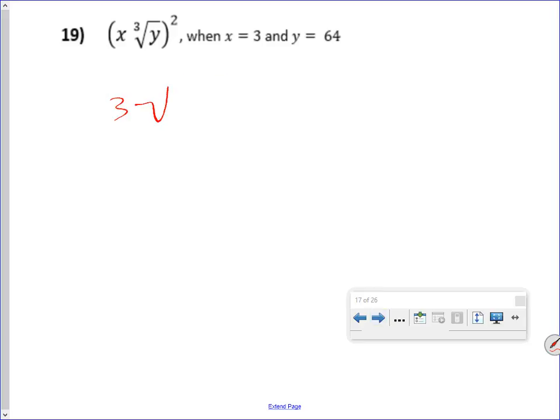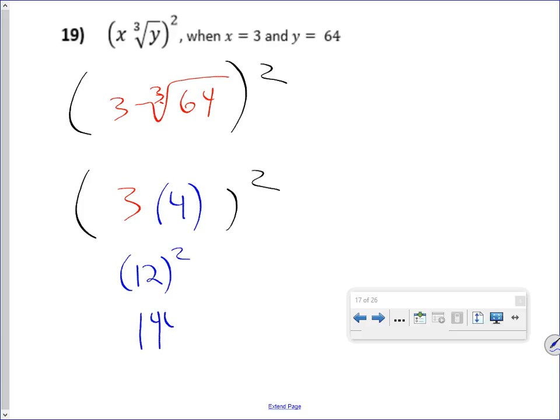3 times the cube root of 64, but we are squaring all of that. So the first thing we need to do is evaluate the cube root of 64, which is 4. So that will be 12 because we multiply what's inside the parentheses first, squared. So that will be 144.